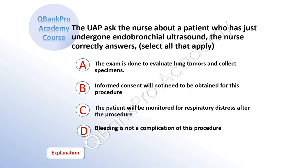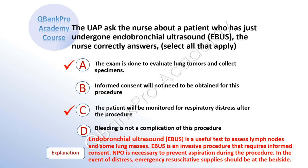The UAP asks the nurse about a patient who has just undergone endobronchial ultrasound. The nurse correctly answers — select all that apply: A, the exam is done to evaluate lung tumors and collect specimens. B, informed consent will not need to be obtained for this procedure. C, the patient will be monitored for respiratory distress after the procedure. D, bleeding is not a complication of this procedure. The correct answer is A and C. Explanation: Endobronchial ultrasound is a useful test to assess lymph nodes and some lung masses. It is an invasive procedure that requires informed consent. NPO is necessary to prevent aspiration, and emergency resuscitative supplies should be at the bedside.